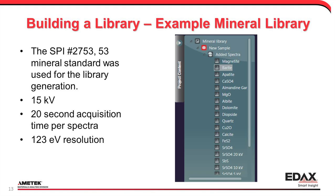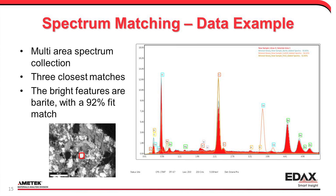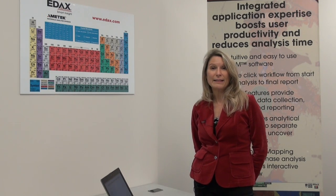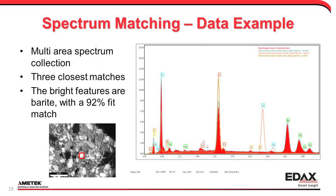In the example shown here, we built a library based on a mineral standard — specifically a common SPI mineral standard under typical microscope conditions on an EDX system. Each spectrum was collected for only 20 seconds. We then analyzed an automotive brake pad as our composite sample, taking spectra from different areas. The bright feature was selected as our analysis location, and after gathering the spectrum and clicking the match button, the match tells us that spectrum from that bright area matches the mineral barite with a 92% fit value.